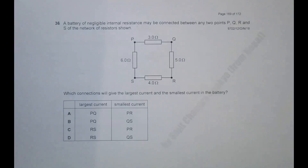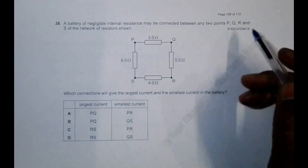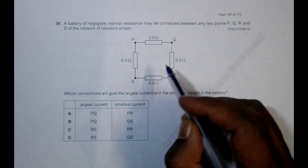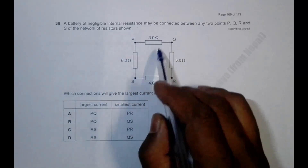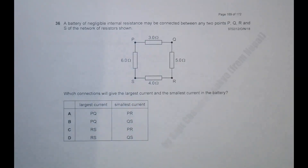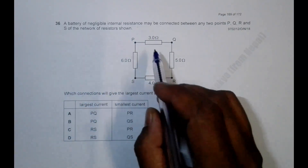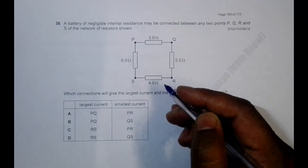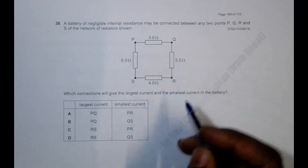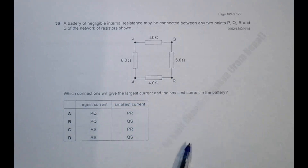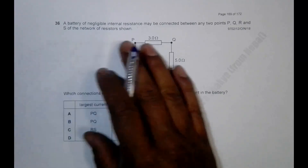Hello folks. This is a 2018 October/November Paper 1, question number 36. It says that a battery of negligible internal resistance may be connected between any points P, Q, R, and S on the network of resistors. We have to find which connections will give the largest current and the smallest current in the battery.